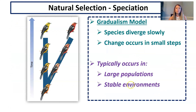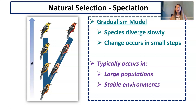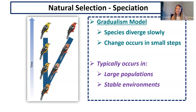Gradualism says that species diverge very slowly and changes occur in very small steps until many generations later you have enough accumulated changes to produce a new species. You typically see this in very large populations where the environment is very stable. That's gradualism — small gradual changes that add up.